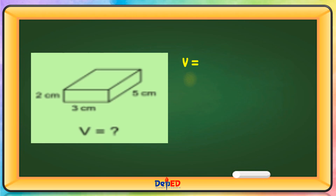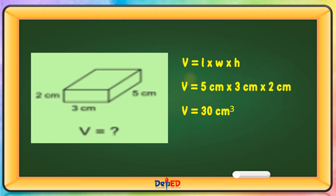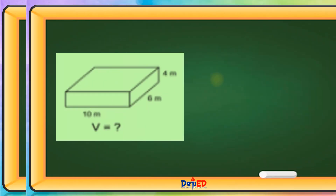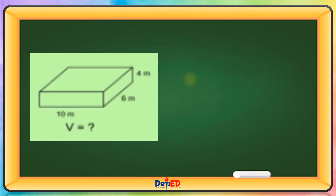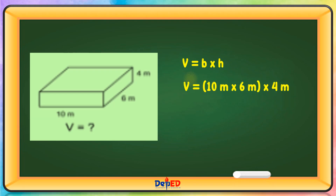Another example: volume is length times width times height. 5 cm × 3 cm × 2 cm equals 30 cubic centimeters. For a larger example using meters: 10 meters × 6 meters × 4 meters equals 240 cubic meters.